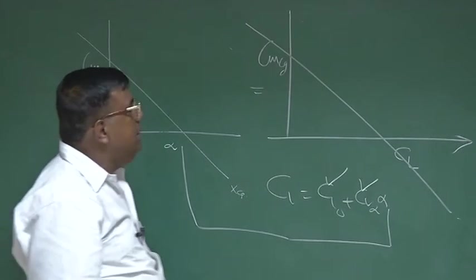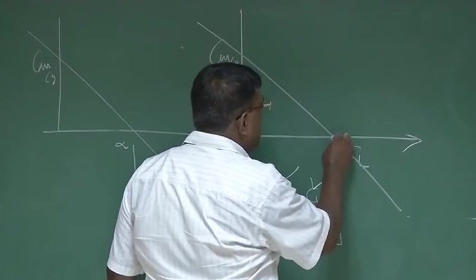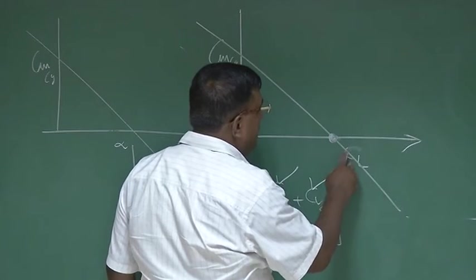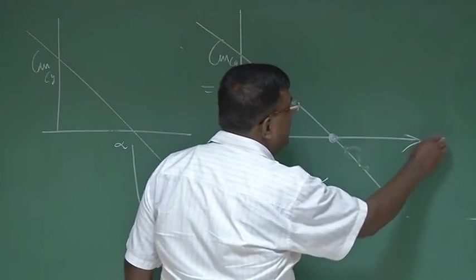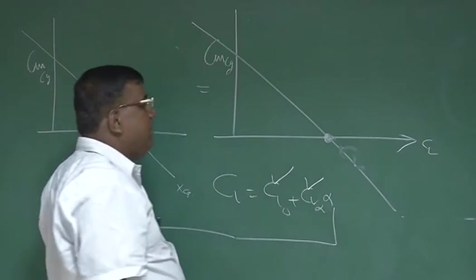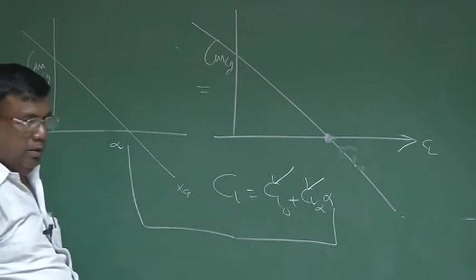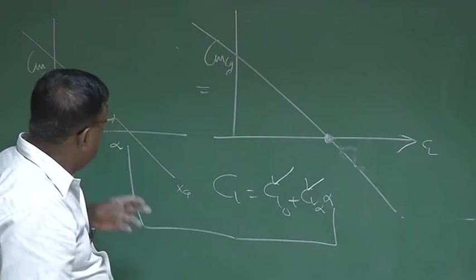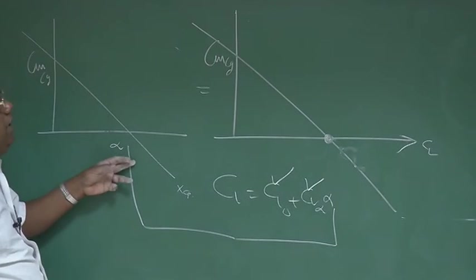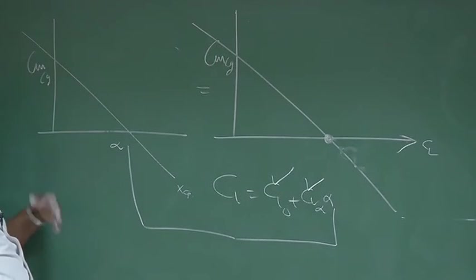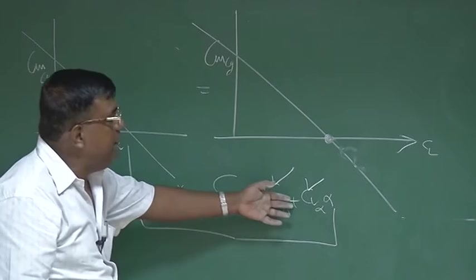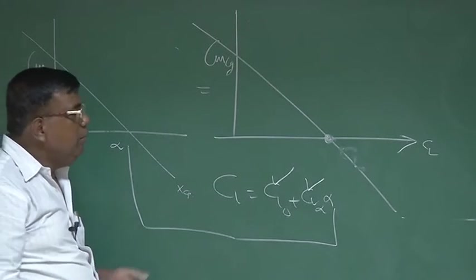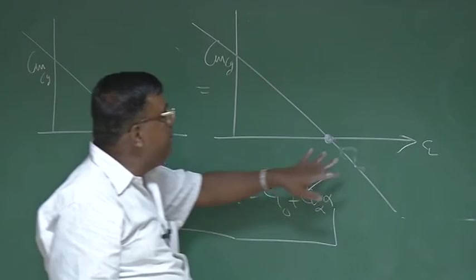Now our question is: let us check about the trim point, about the equilibrium point, whether this aircraft is statically stable or not. We know it has to be stable — slope is negative. We know only that CM versus alpha slope is negative, but because alpha and CL can be related, the slope has to be negative. But let us add some physics to it.